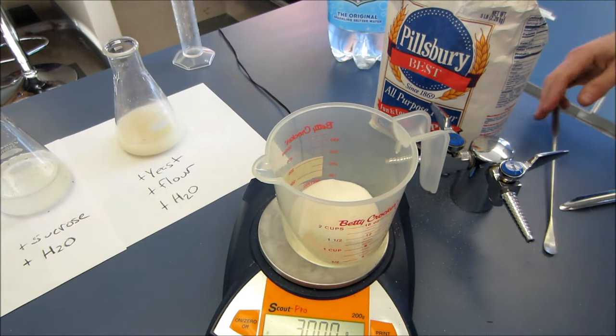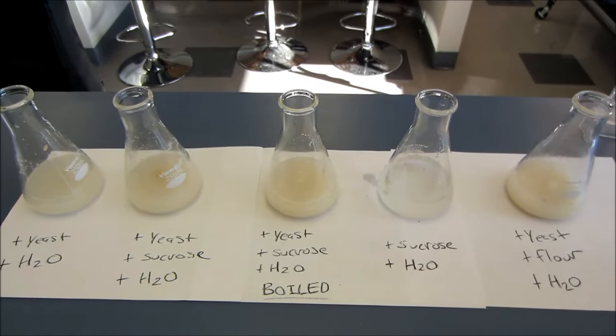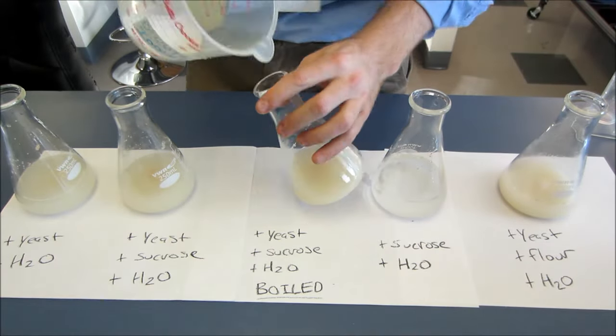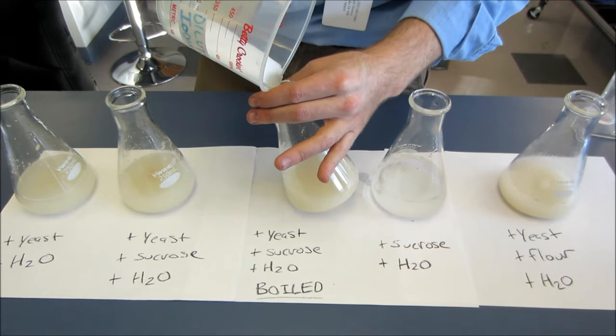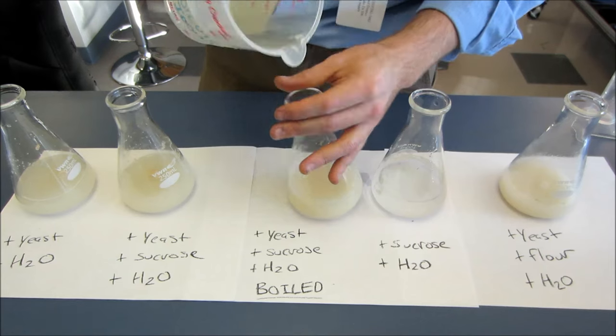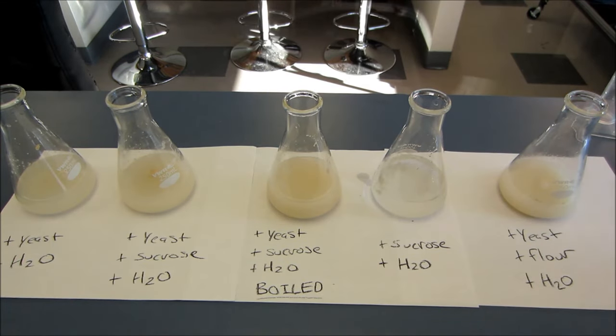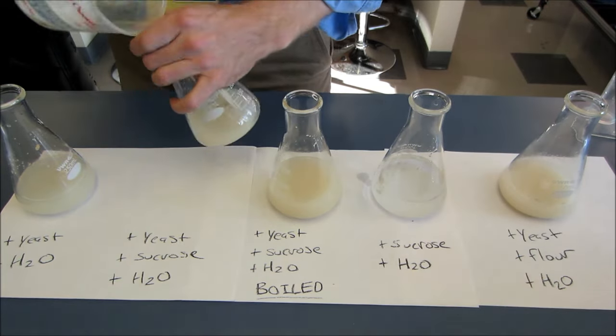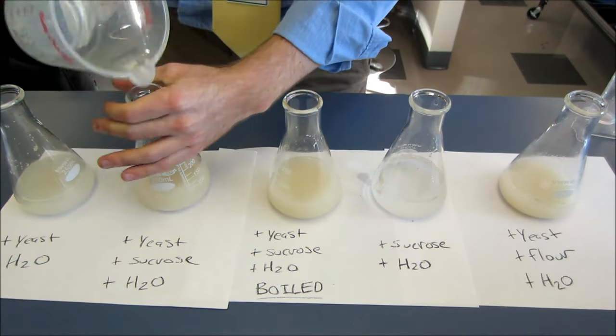I'm going to try and be precise with my measurements here. I've got my sugar and I'm going to add it to a few of these. I'm going to add it to this one here, yeast, sugar, water and I'm going to boil this one. I'm also going to weigh some out and I'm going to add it to flask two. That's just yeast, sugar and water.